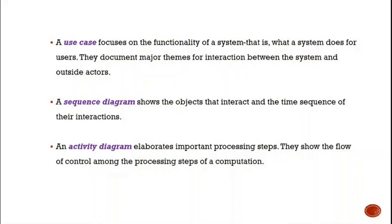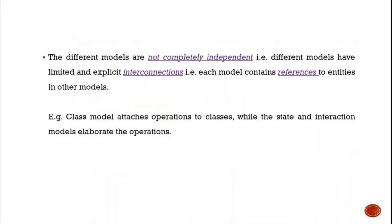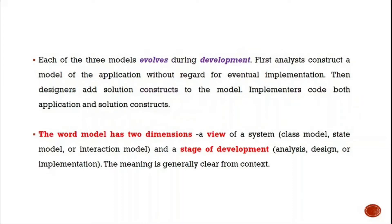The different models are not completely independent — they are all dependent. The different models have limited and explicit interconnections, meaning each model contains references to the other models. The class model attaches operations to classes, while the state and interaction models elaborate those operations. Each of the three models evolves during development. First, a model of the application is constructed without regard for eventual implementation; then the designer adds a solution to the model and implementers code the application.